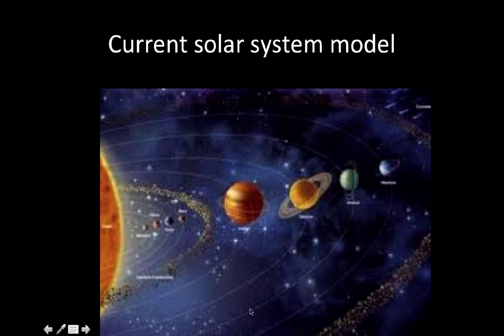Here's our current solar system model. We've got the asteroid belts, our big gas giants out here, and our inner terrestrial planets.